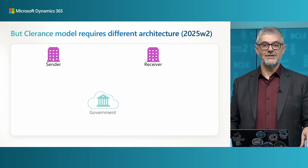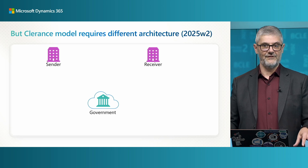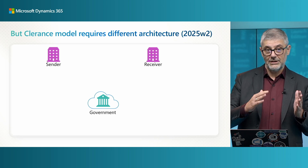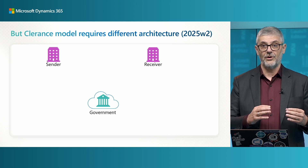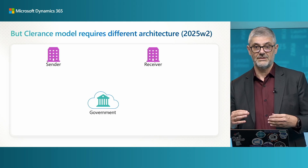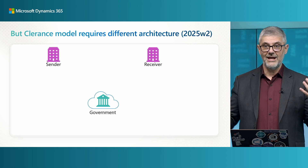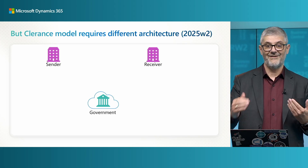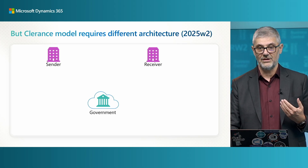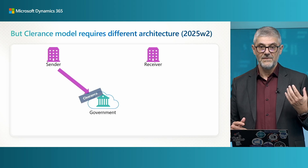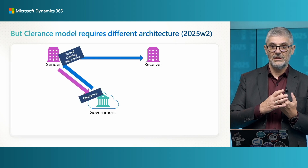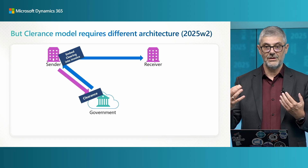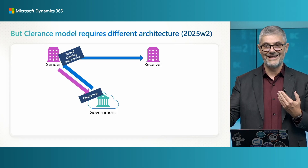But the clearance model is different — it requires a different architecture. The foundational process is different. We have a sender, a receiver, and we have the government or some other authorities where you will validate your invoices. First, you need to send your invoice to the government or tax authorities for clearance.